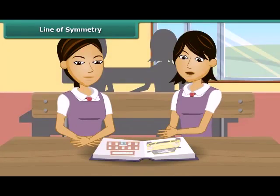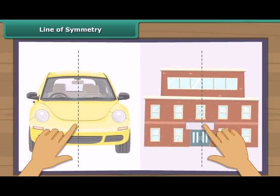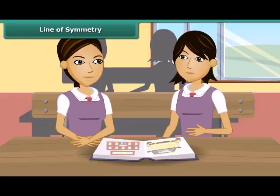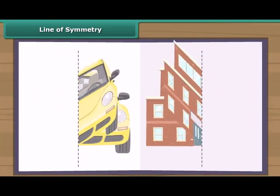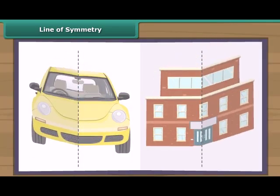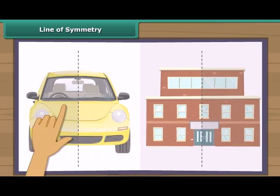Look at these figures. The line you can see is the line of symmetry of these figures. Line of symmetry — what is that? When we fold the figure about this line of symmetry, we will see that the two parts of the figure are coinciding.